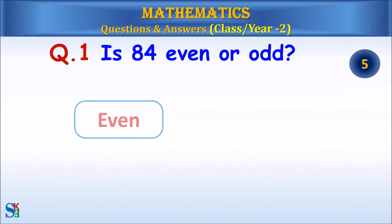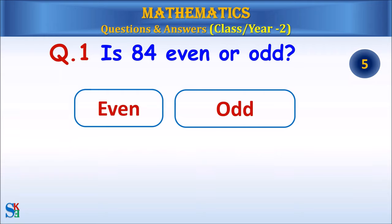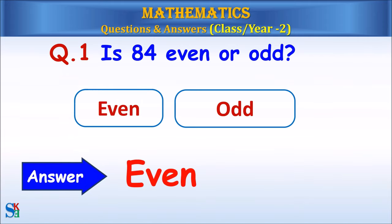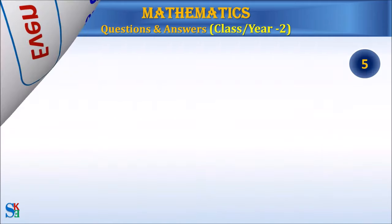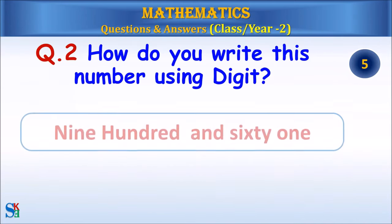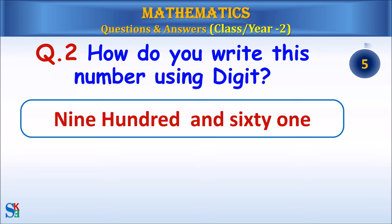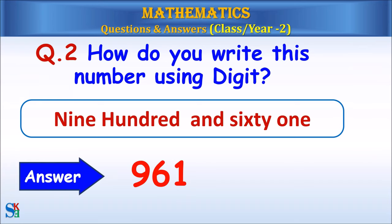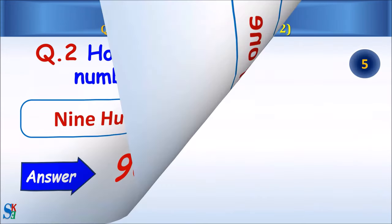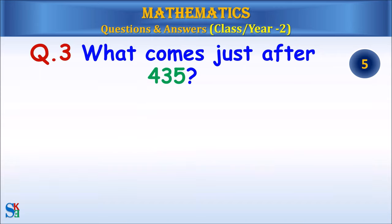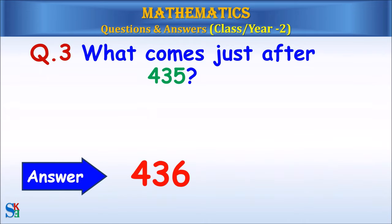Question 1: Is 84 even or odd? Answer: Even. Question 2: How do you write this number using digits? Answer: 961. Question 3: What comes just after 435? Answer: 436.